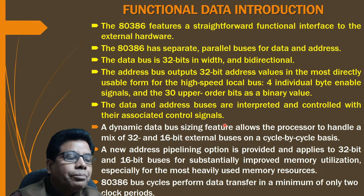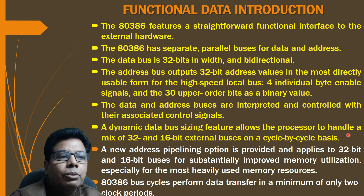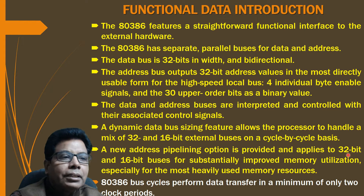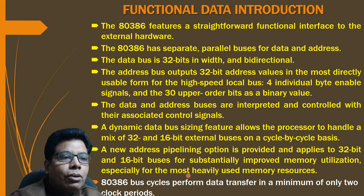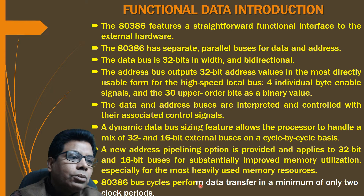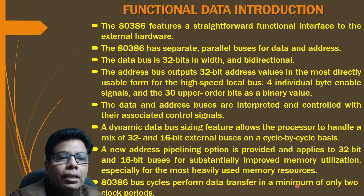The dynamic data bus sizing feature allows the processor to handle a mix of 32 and 16-bit external buses on a cycle-by-cycle basis. A new address pipelining option is provided and applies to 32-bit and 16-bit buses for substantially improved memory utilization, especially for the most heavily used memory resources. The 80386 bus cycle performs data transfer in a minimum of only two clock periods, which improves the speed of the processor.